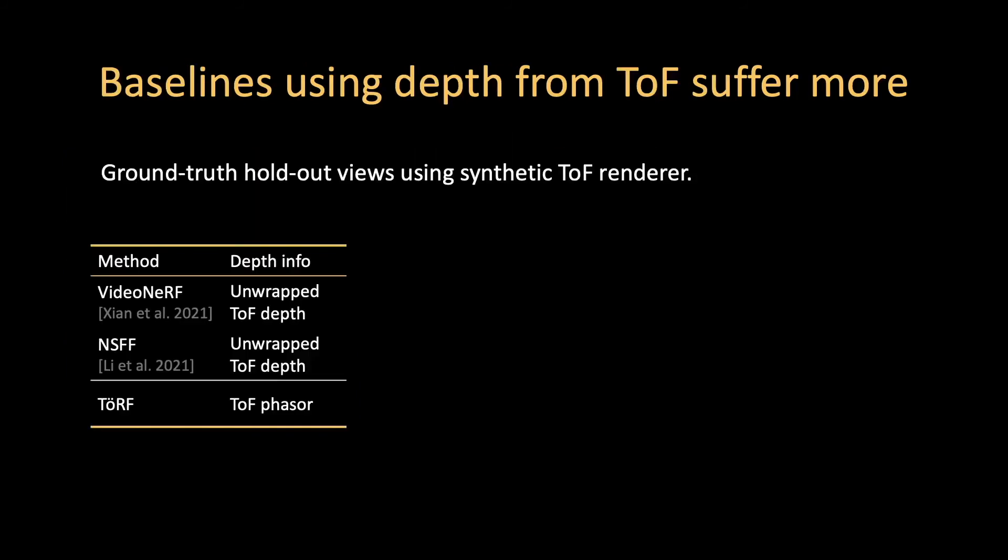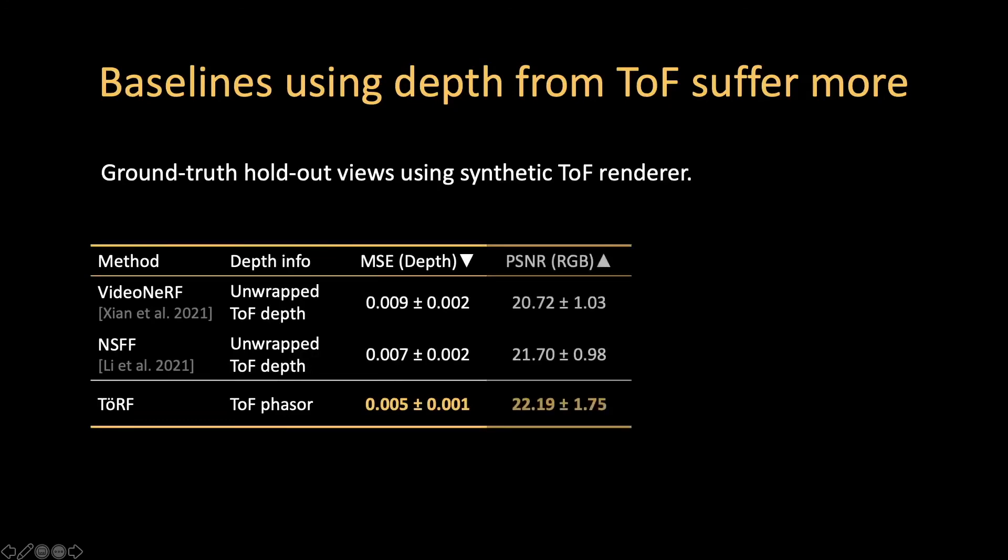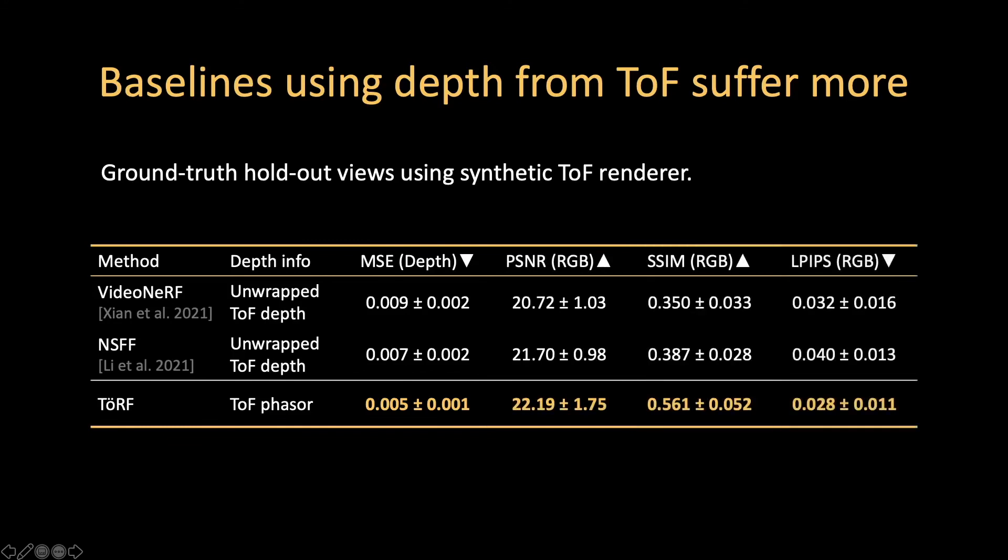We also perform quantitative evaluation on ground truth sequences generated using a synthetic time-of-flight path tracer. We provide baseline video nerf and NSFF approaches with depth derived from time-of-flight, in which phase-wrapping errors have been manually corrected. Otherwise, the errors are much larger. For depth accuracy, our mean squared error metric is lower. For RGB metrics, each of PSNR, SSIM, and LPIPs is also better.